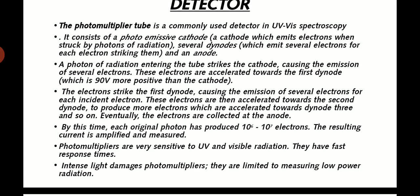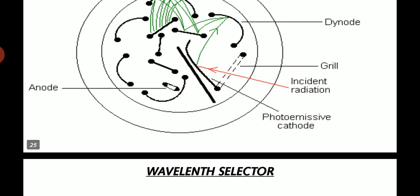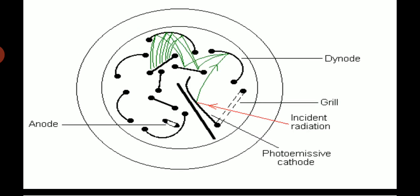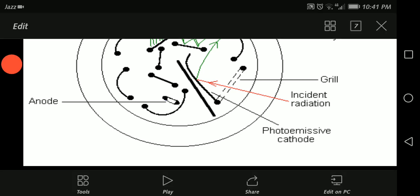Detector. The photomultiplier tube is commonly used in UV visible spectroscopy. It consists of a photoemissive cathode, a cathode which emits electrons when struck by photons of radiation, and several dynodes. A photon of radiation entering the tube strikes the cathode, causing the emission of several electrons into a dynode chain which amplifies more than the cathode. Photomultiplier tubes are very sensitive to UV and visible radiation. By this time the original photon has produced 10 to the power 6 to 7 electrons. The resulting current is amplified and measured.